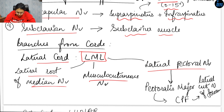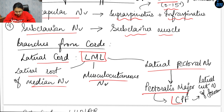The lateral pectoral nerve supplies the pectoralis major muscle. The musculocutaneous nerve then pierces the coracopectoral fascia and forms the lateral cutaneous nerve of the forearm.